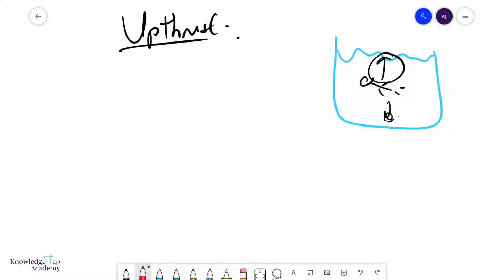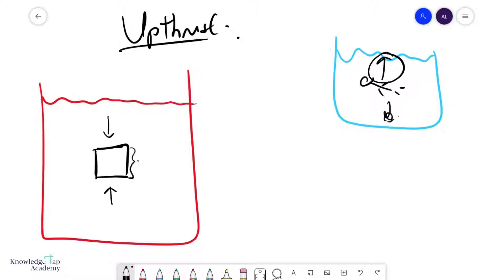And so how does upthrust come about, actually? So if we look at something that's inside some water, we know that pressure acts all around it. So there's some pressure here and there's some pressure here. And let's call this length over here X. Let's call this area here the cross-sectional area of this object.